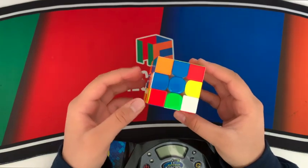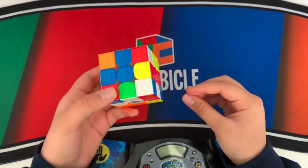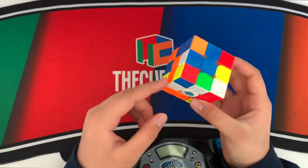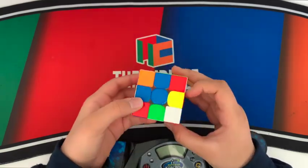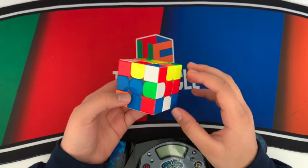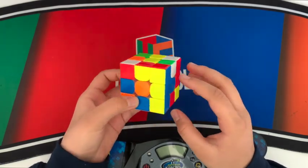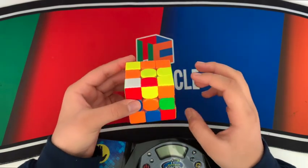Make sure you do the same cross solution as I do so that you get the same F2L cases. So I'm going to hold blue in front, and I notice that this edge can be solved in just one move. So I insert that edge, and then instead of going for the green, I go for the red, but I line up the green to be inserted directly after, like that, and a D to align the cross.